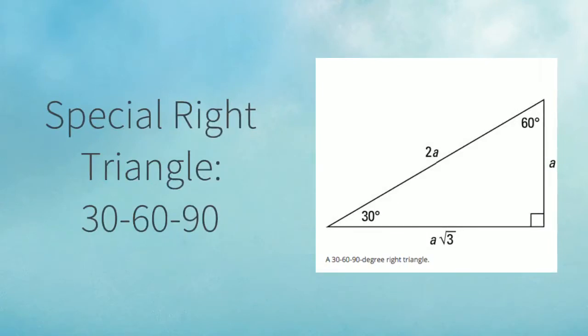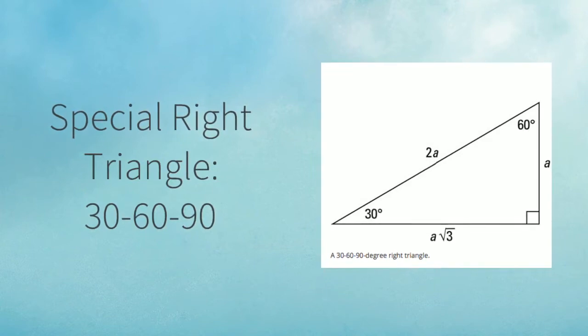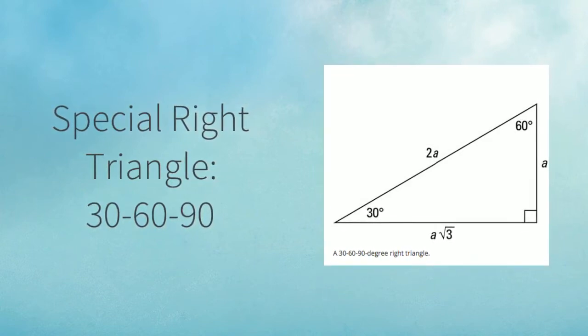The second special right triangle is a 30-60-90 triangle. The side length ratio is 1 root 3 and 2.